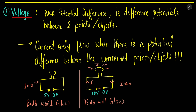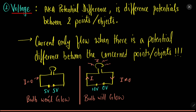Let us now understand voltage, also known as potential difference. Potential difference is the difference of potentials between two points. Potential was the amount of work done per unit charge in bringing a charge from infinity to a point A in the electric field. Potential difference is the difference of potential between two points.